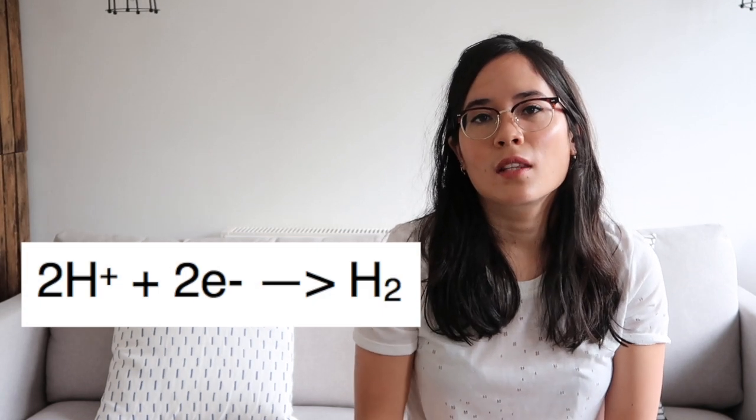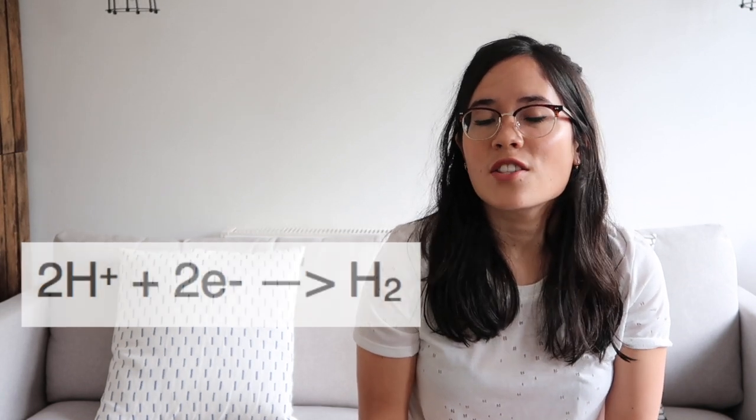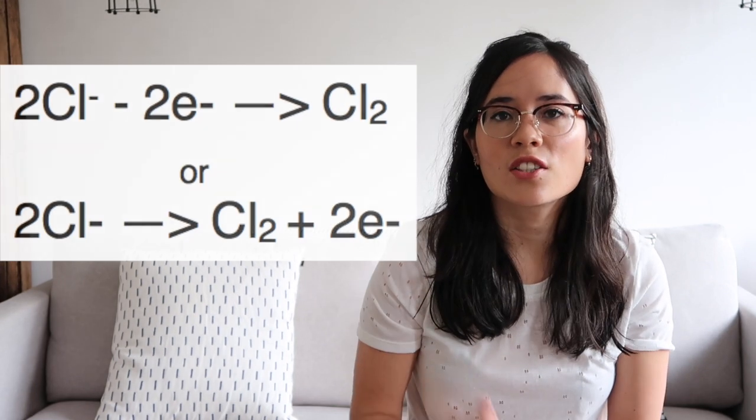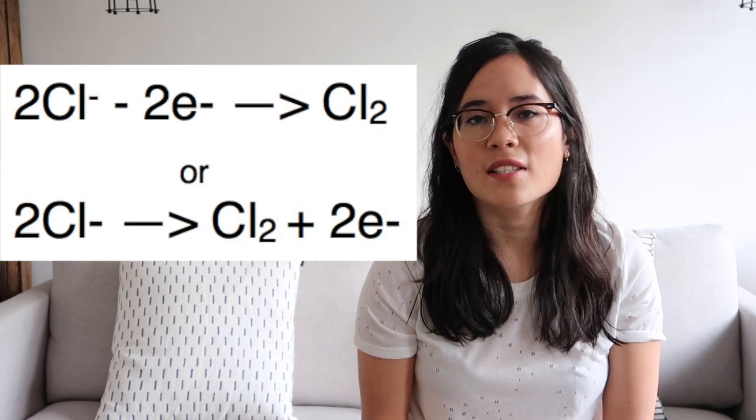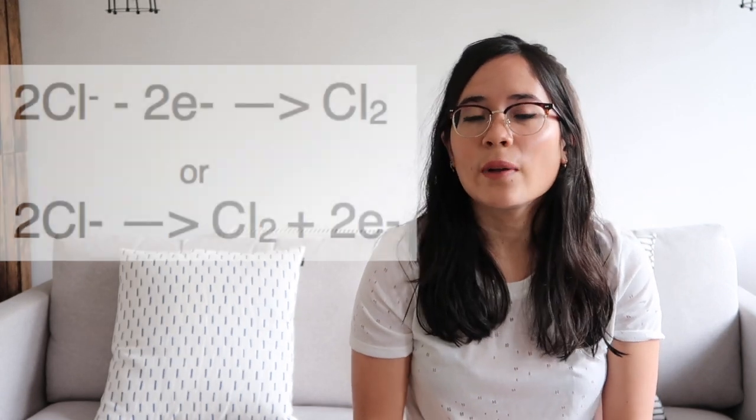Now we need to look at half equations. Can you write the ionic half equation for the discharging of hydrogen? That will now flash up on screen. Now write the ionic half equation for the discharging of chlorine — that should be flashing up next to me as well.